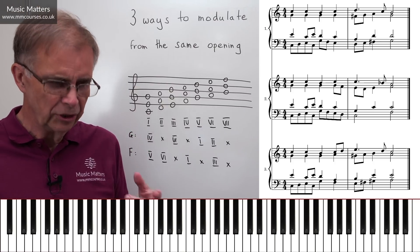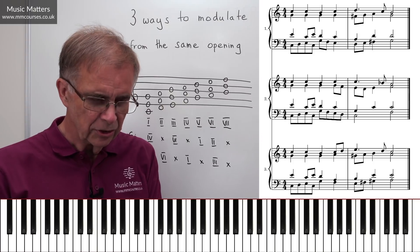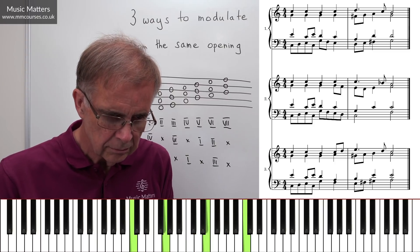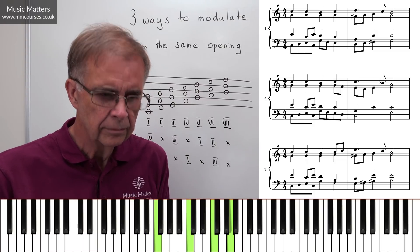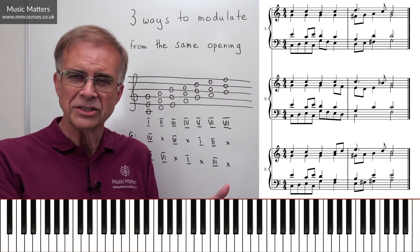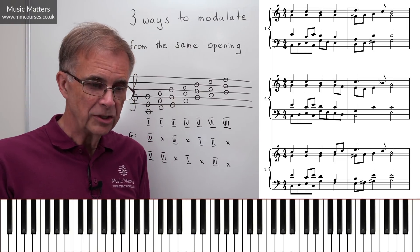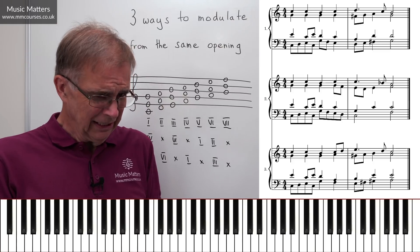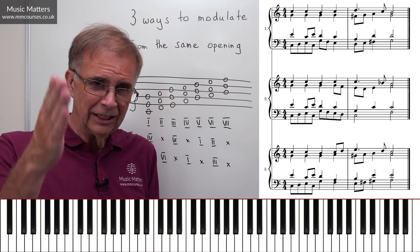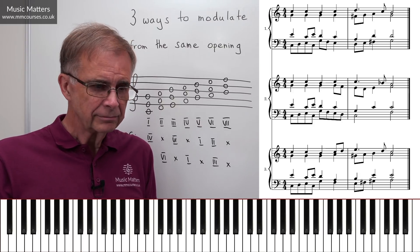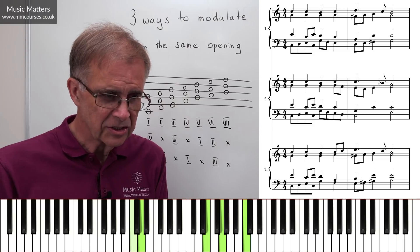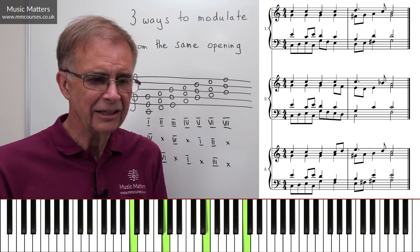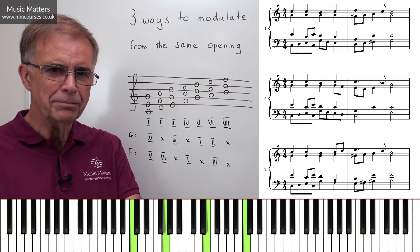Let's have a look at number two. We can hear how it starts in C major and then cadences in F major at the end of the second bar. The pivot chord now comes at the beginning of the second bar. We've got the same opening as before, and when I come to the beginning of bar two, I've got a chord of C major.